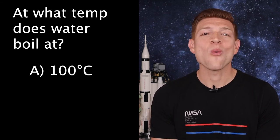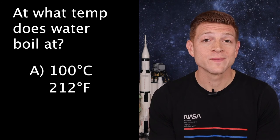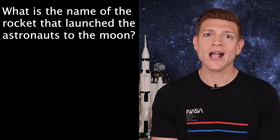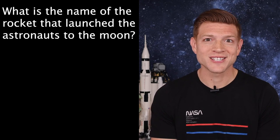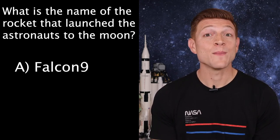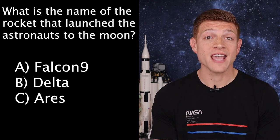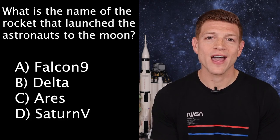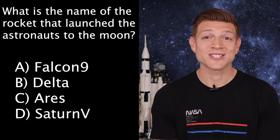Now on to trivia. The answer to last week's question — at what temperature does water boil — is 100 degrees Celsius or 212 degrees Fahrenheit. This week's question is: what is the name of the rocket that launched the astronauts to the moon? Is it A) Falcon 9, B) Delta, C) Aries, or D) Saturn 5? Tune in next week to get your answer. Always be curious!